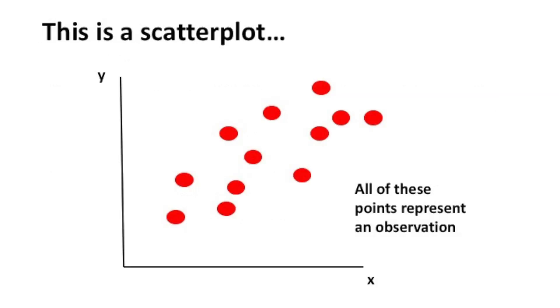Here's an example of a scatter plot. You see that I've labeled the y-axis and the x-axis, and all those points represent observations in your data set. After making a scatter plot, you want to characterize its form, direction, and strength.